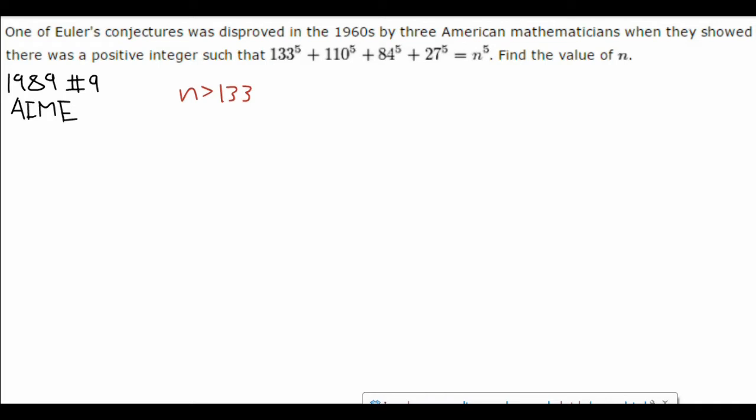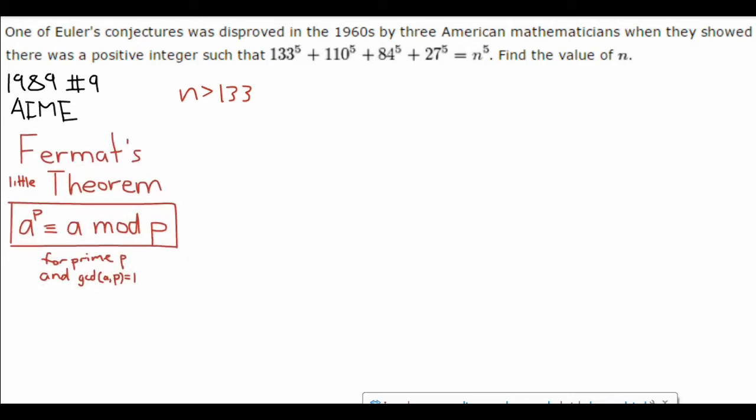Looking at all these fifth powers makes us think of a theorem called Fermat's Little Theorem. It states that a^p is congruent to a mod p for prime p, and the greatest common divisor of a and p is 1. I think I've introduced this in a previous video before, so if you haven't seen it, go check it out. So we see that p, in this case, is equal to 5.